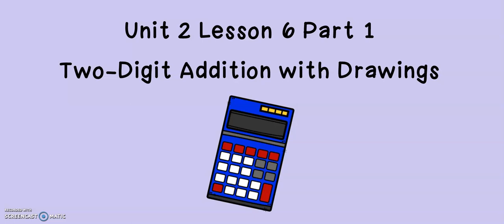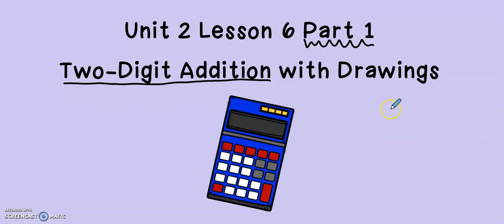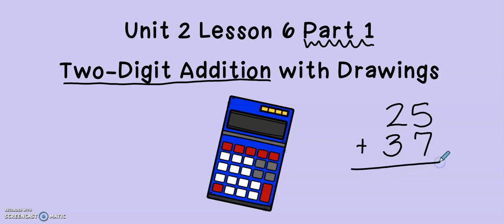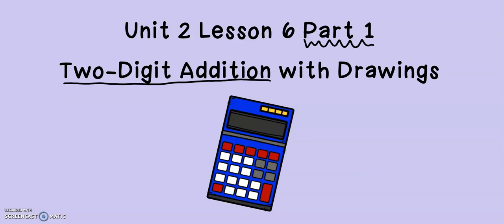Hi, 2nd grade. I'm very excited for today's lesson because today we have a very important lesson. This lesson will help us with our math throughout the rest of 2nd grade, but also for many, many years to come. This lesson is only part one of three parts. Today, we're going to look at the first strategy to help us do two-digit addition. That means problems that look like this: 25 plus 37. So far this year, we have not had any problems with two digits and two digits, but today we're going to learn the first strategy.